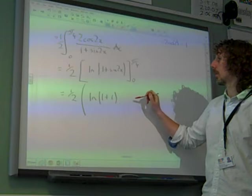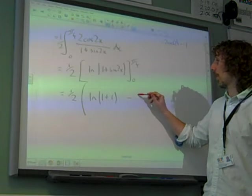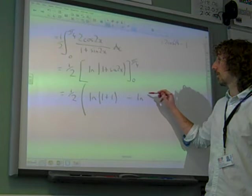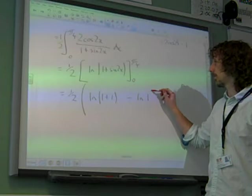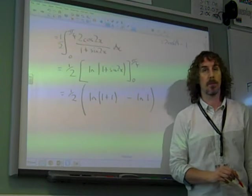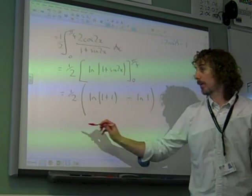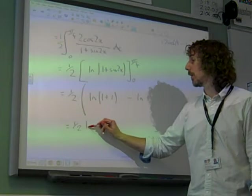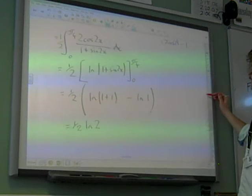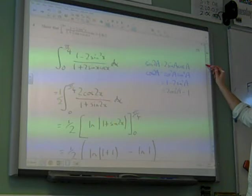So we take away the natural log of 1 plus 0. And we're there. Half of ln 2. And there it is.